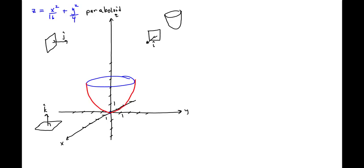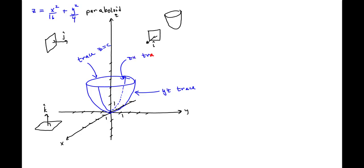Here is our paraboloid. Notice how we have a trace for some non-zero positive value of z, a YZ trace, and a ZX trace. With these traces, we are able to sketch this paraboloid.